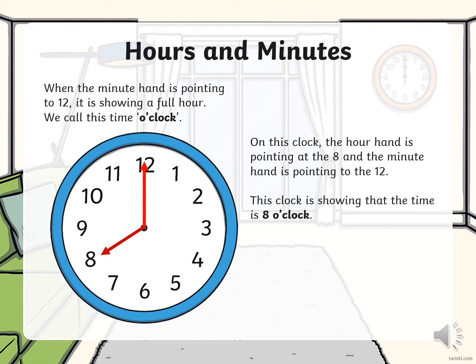We call this time o'clock. On this clock, the hour hand is pointing at the 8 and the minute hand is pointing to the 12. This clock is showing that the time is 8 o'clock.